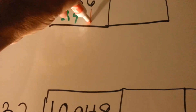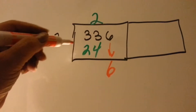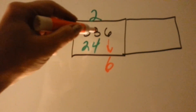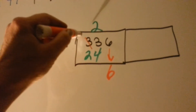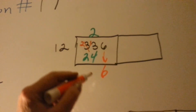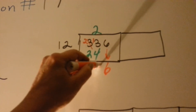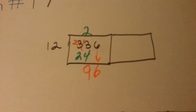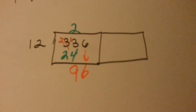We drop the 6 down — it's its turn to come down. And we say 3 take away 4, and we can't, so we have to borrow from this 3. It becomes a 2, and that becomes a 13. And now 13 take away 4 is 9. And now we have 96. Now it's the 96's turn to go into the next box.